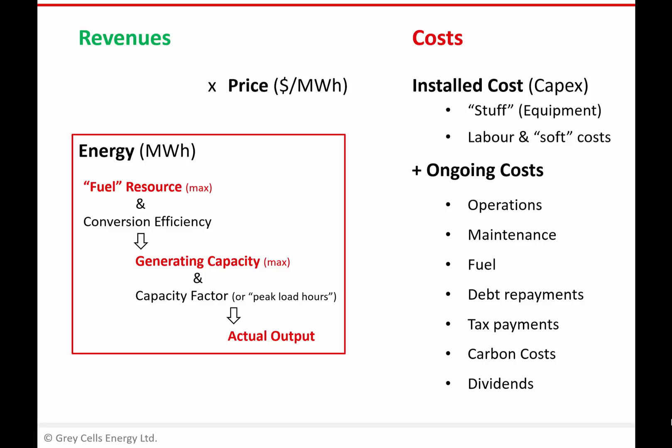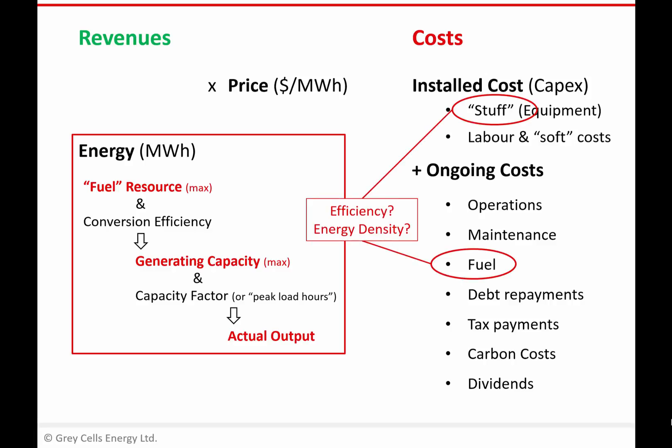It's also worth reminding ourselves how characteristics like efficiency and energy density also impact the cost side of this picture. If we're converting our fuel at lower efficiency, then to generate a certain amount of energy we'll need more fuel — affecting our fuel costs and potentially transport and storage costs as well. Also if our fuel is less energy dense, we'll need more weight or volume of it in order to generate the same electricity output for a given conversion efficiency.